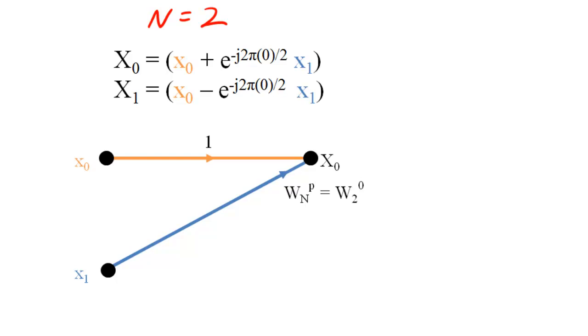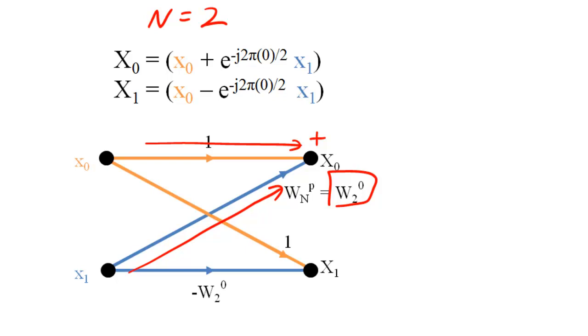Schematically, we calculate the DFT using a structure called a butterfly. This schematic shows that we multiply X1 by W sub 2 raised to the 0 and add a product to X0 to compute the first DFT sample. We also multiply X1 by negative W sub 2 raised to the 0 and add that product to X0 to compute the second DFT sample.